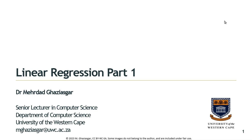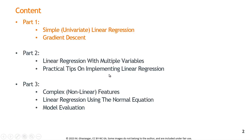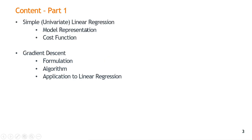Hello again. In our last video, we kicked off the discussion of linear regression through a series of PowerPoint slides. We introduced a simple example of linear regression, which is univariate linear regression, and we talked about model representation. Essentially, we gave a particular example where housing prices were predicted from housing sizes — if you knew the square meter size of a house, you used that information to predict its price.